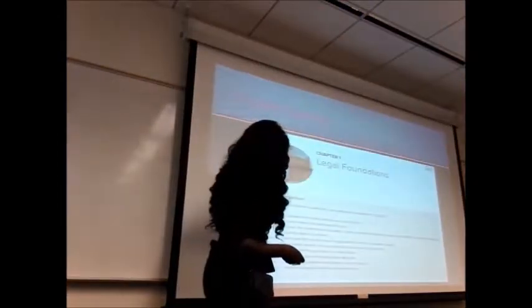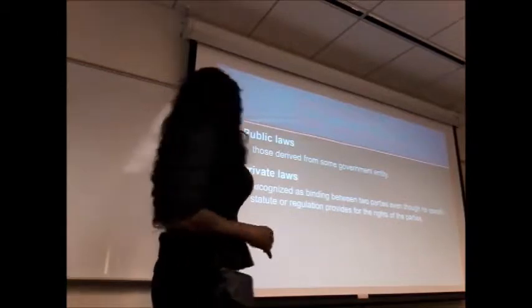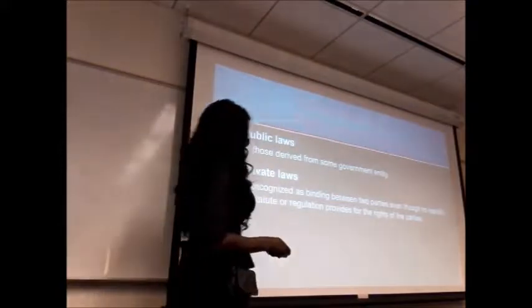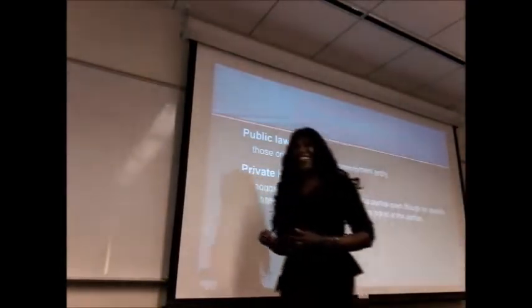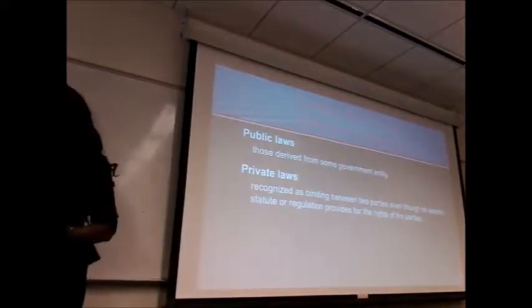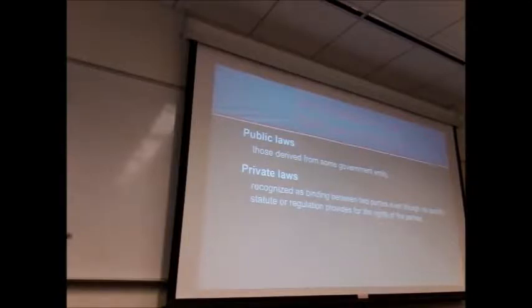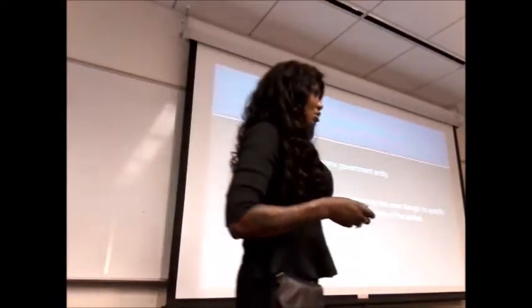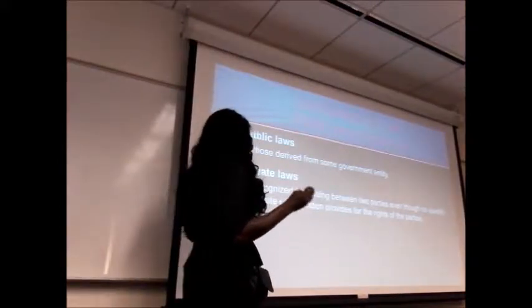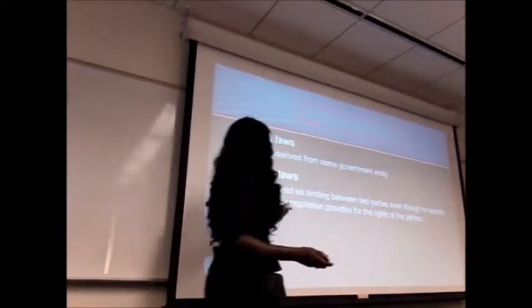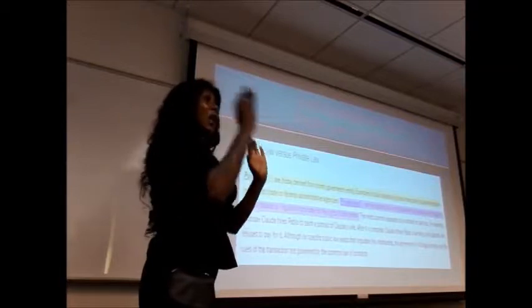Now we're going to talk about some categories of law. Let's go back to our learning objectives. We're moving into categories of law, and we'll talk about public laws and private laws. Public laws are derived from some government entity like the Department of Labor. Then you have your private laws — like if I walk into your store and slip because your floor is wet, then I'm going to sue you. It may be based on common law that we talked about earlier.